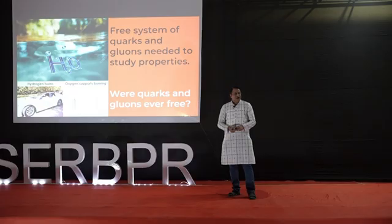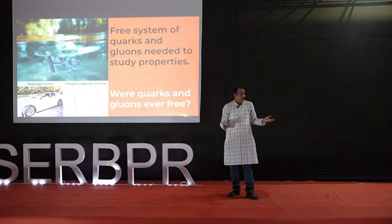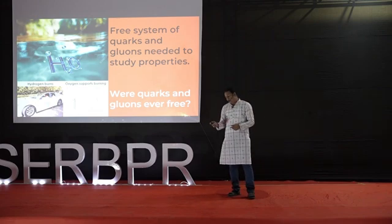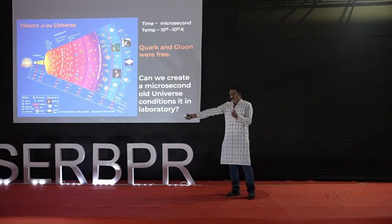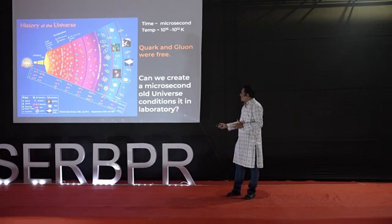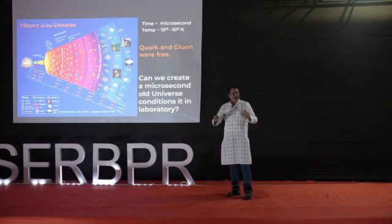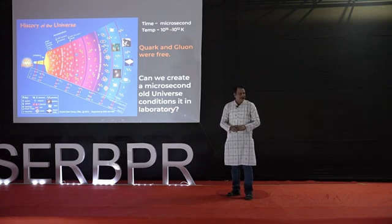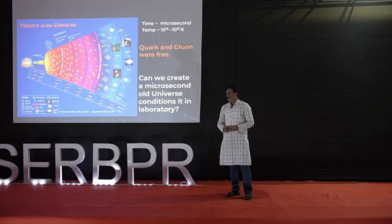The question is: they are not free in the current universe — were they ever free? Yes. The universe evolved into its current form over 13.8 billion years. However, when it was a microsecond old, the temperatures were 10 to the power 12 Kelvin, and the building blocks of visible matter — electrons, quarks, and gluons — were free. So the next step is: can we recreate the conditions of a microsecond-old universe in the laboratory? Then we can study its properties.